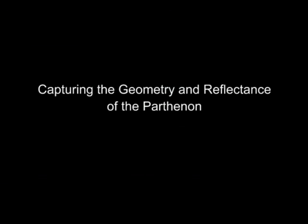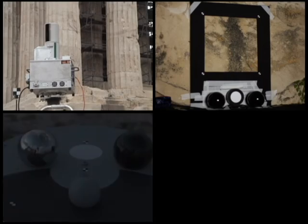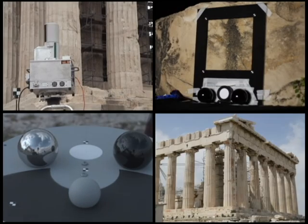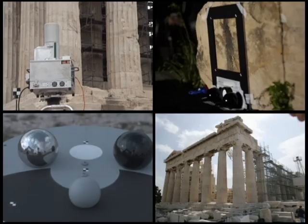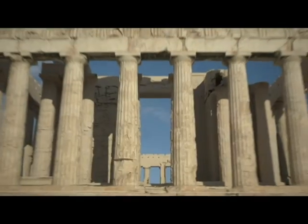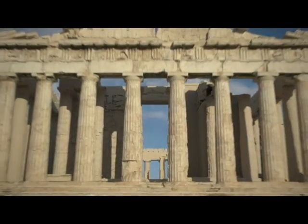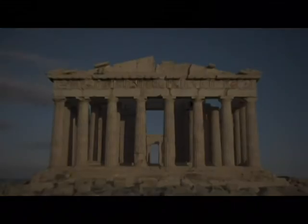In this video, we present a process that uses 3D scanning, BRDF measurement, incident illumination capture, and digital photography for capturing spatially varying reflectance properties of real-world scenes observed under natural illumination. The result is a texture-mapped three-dimensional model that can be visualized for novel viewing and lighting conditions.